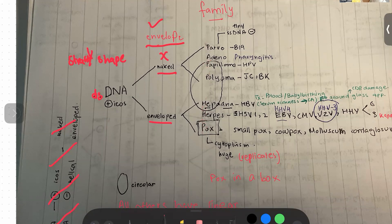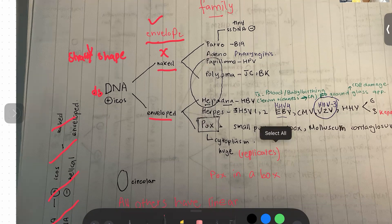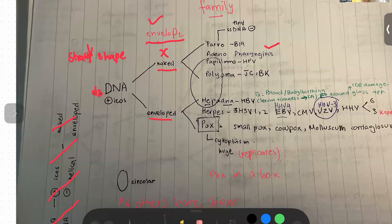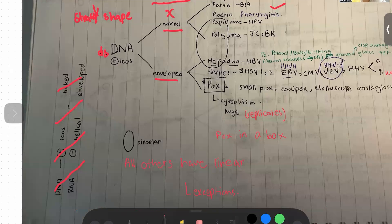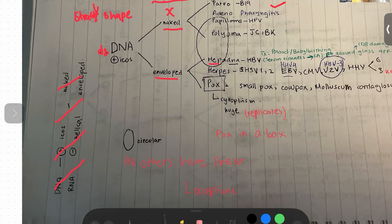For PAP, we have parvovirus — further called B19 — adenoviruses which cause rhinitis, papillomaviruses with HPV in that category, and polyomaviruses which are further divided into JC and PK. The mnemonic is 'junkie cerebellum' and 'bad kidney.' You can consult your First Aid for this part. Then for HHP, we have Hepadnaviruses, Herpes, and Poxvirus. Hepadna covers HBV — so we have the mnemonic that hepatitis B is a Hepadna or DNA virus.